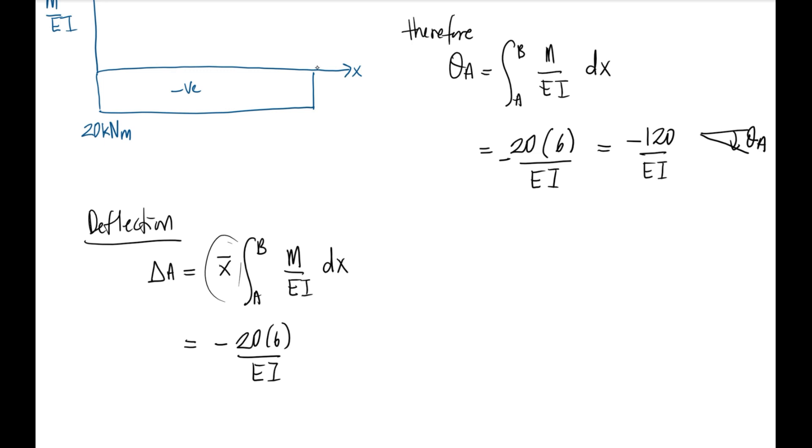since the shape is rectangular, we know that this is 6 meters, so it's half of that. Therefore, your x̄ is 6 divided by 2. You will get negative 360 over EI, so it's going down. All right, that's all for now, thank you for watching.